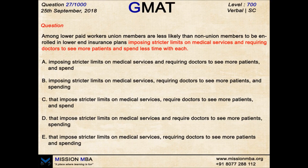Hello and welcome to question number 27 on Daily Dose. Today's question is on sentence correction, level 700. The question says: among lower-paid workers, union members are less likely than non-union members to be enrolled in lower-end insurance plans imposing stricter limits on medical services and requiring doctors to see more patients and spend less time with each. Clearly, this question is testing you on parallelism.